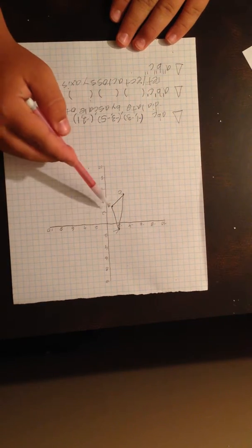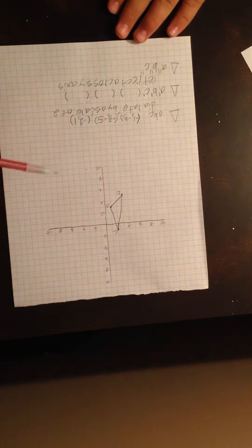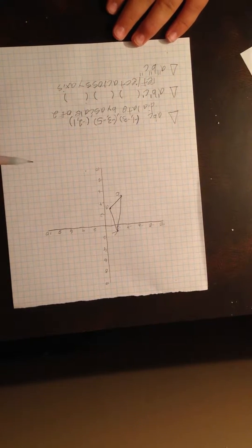So as you can see, I did triangle ABC. A being negative 1, negative 3, B being negative 3, negative 5, C being negative 2, 1.